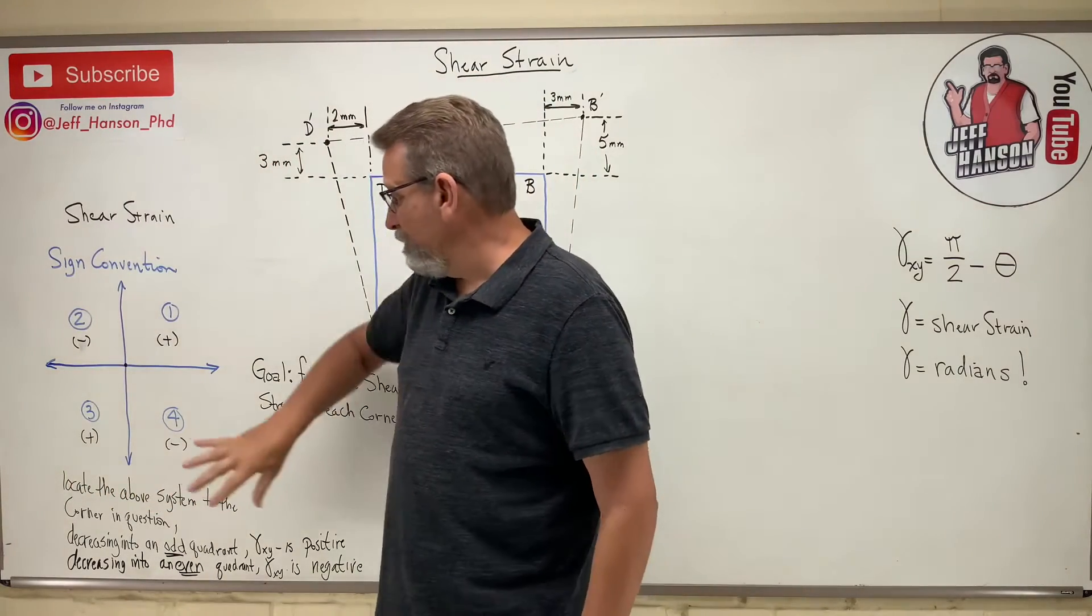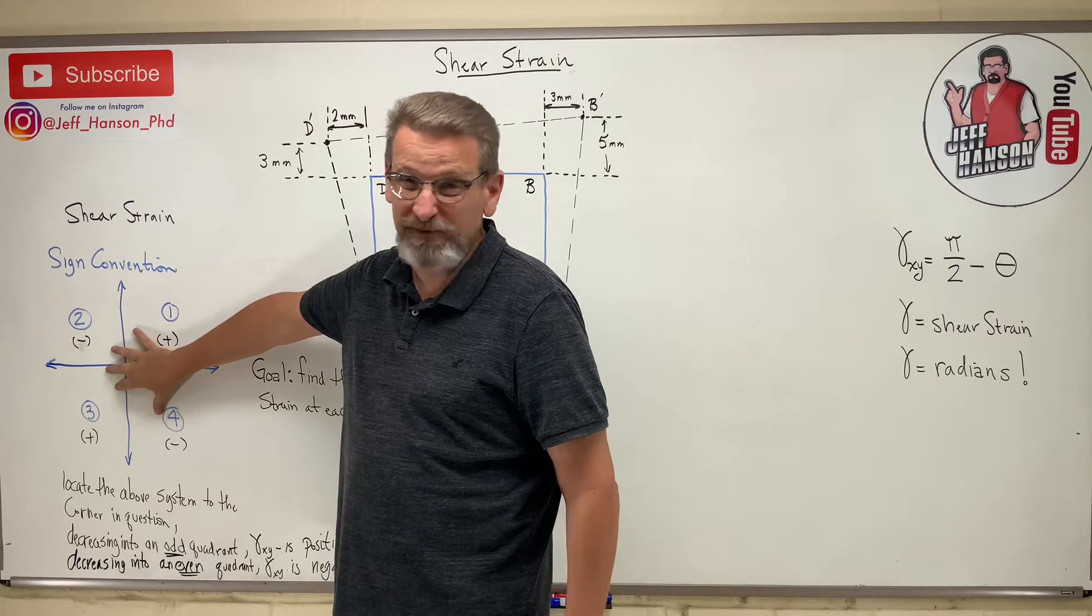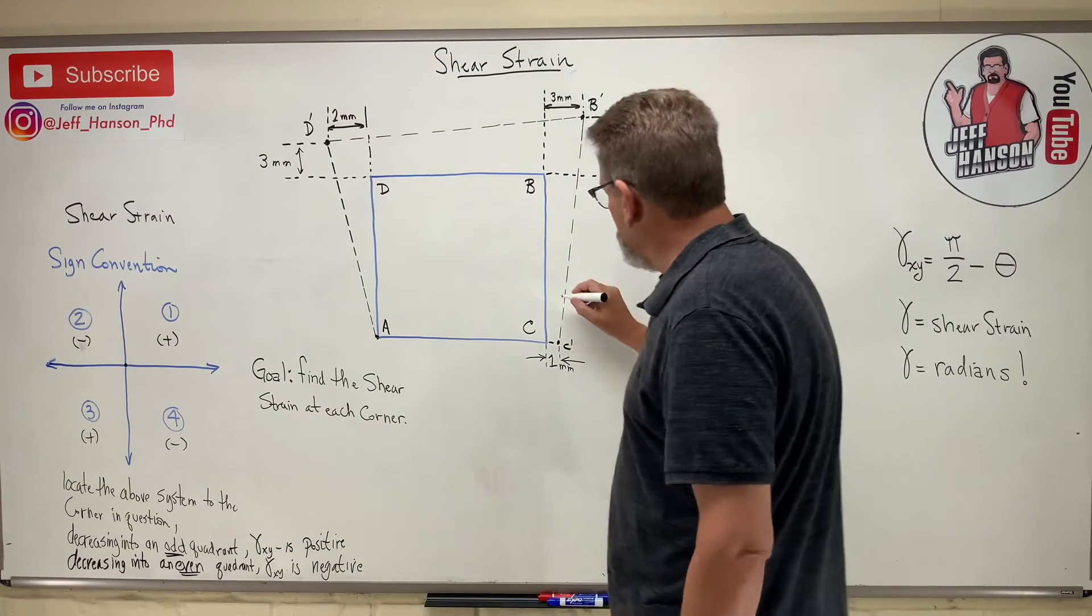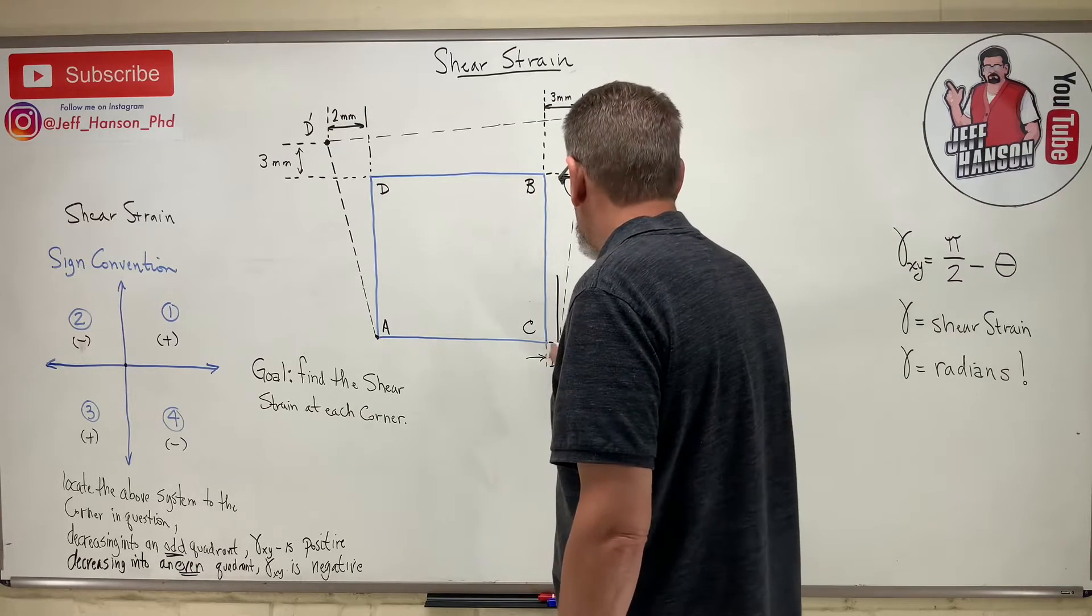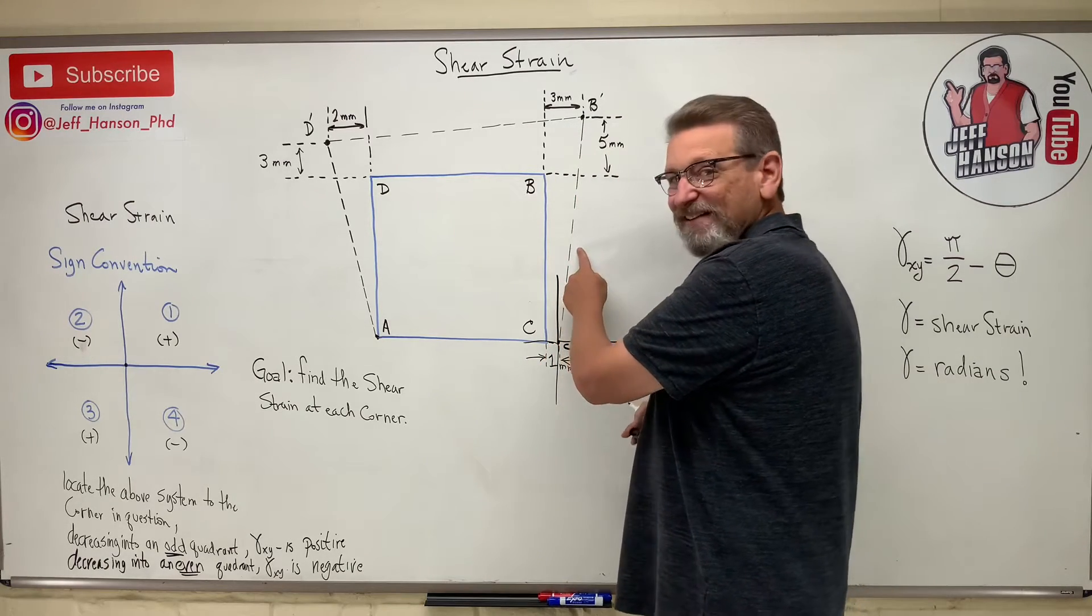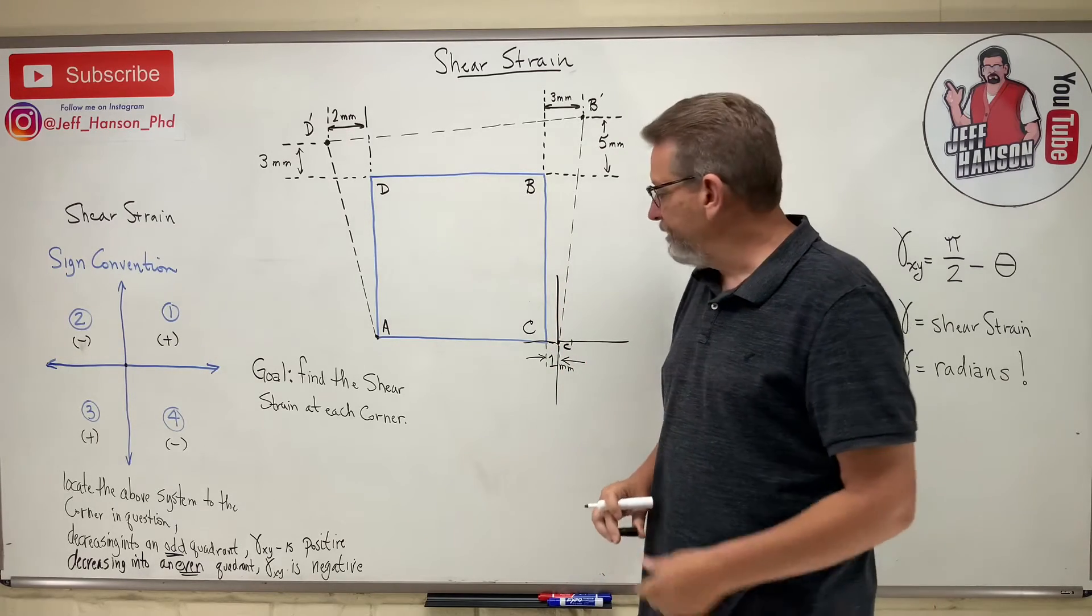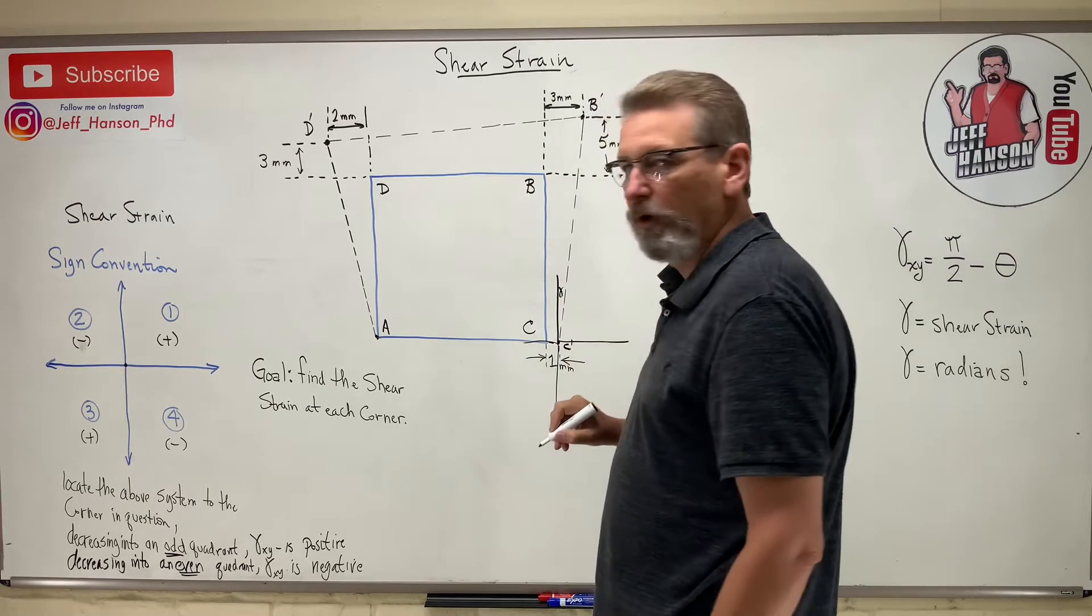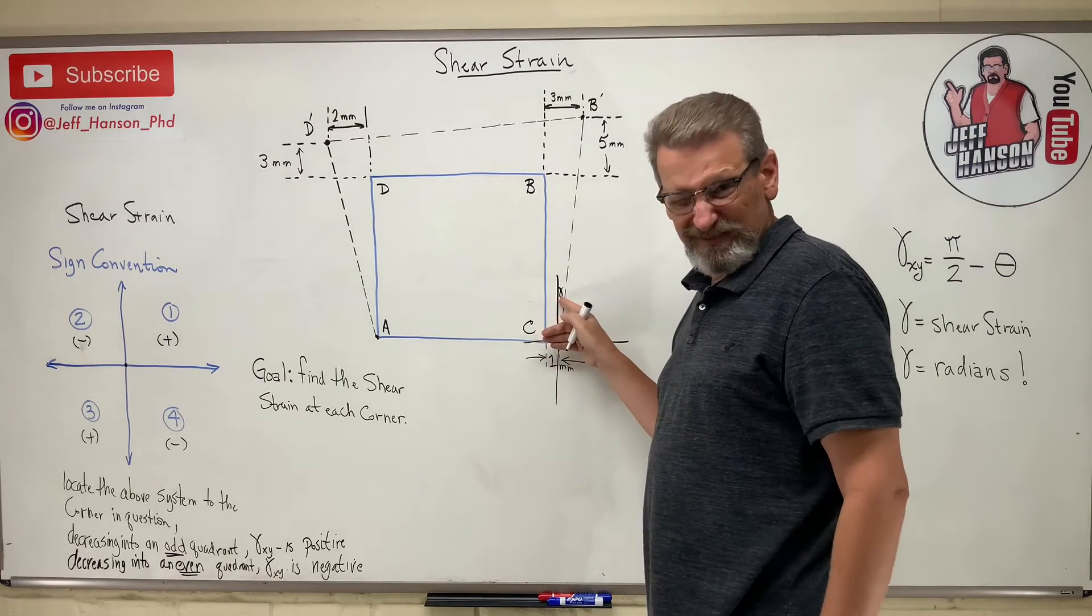So the way you do this is if you move this little coordinate system to your new number, which would be like A prime, B prime, C prime. Move this. So if I move that over here and I put it on top of C prime, right? And here it is. Here's that coordinate system. This deflected side here has increased into quadrant one. Now what we call that is, there's our little gamma that we're looking for. It's 90 minus theta, which leaves you with gamma, doesn't it?